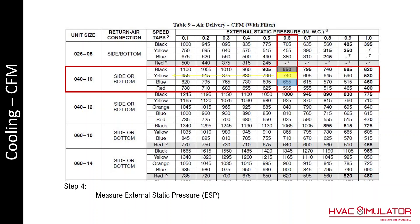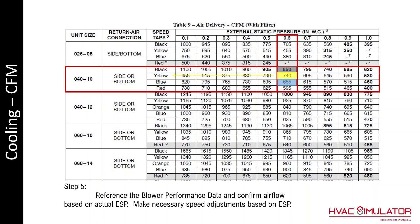Then measure the actual external static pressure and reference the blower performance data to see where the actual value falls. If the actual, in this example, were to be 0.7 inches of water column, then a judgment call needs to be made by a technician. At 695 CFM — is that a good value? It's a little below 700, but the technician may choose 795 CFM, which would be the black speed tap.